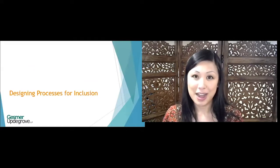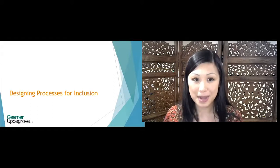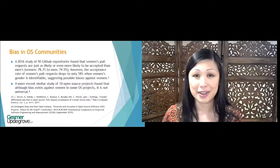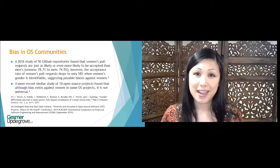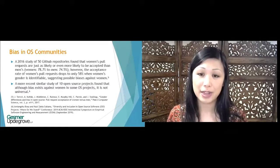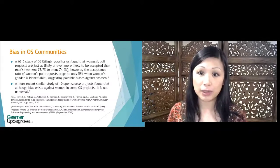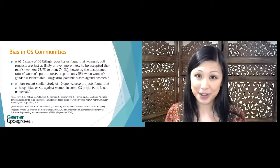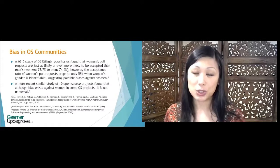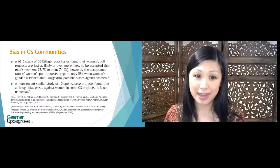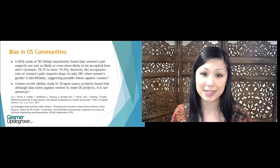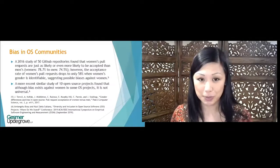Design processes for inclusion, including designing around bias if that is a concern. Bias against underrepresented groups does still exist in our society and in many open source communities. A 2016 study of 50 GitHub repositories found that women's pull requests are just as likely or even more likely to be accepted than men's when their gender is not easily identifiable. However, once gender is easily identifiable, the acceptance rates of women's pull requests drops significantly, indicating bias is present. A more recent study of 10 open source projects found that although bias does exist in some projects, it does not exist in all open source projects and so is not universal.